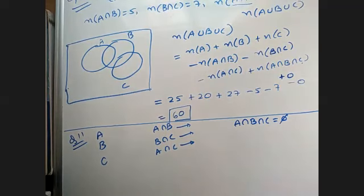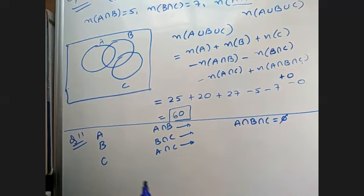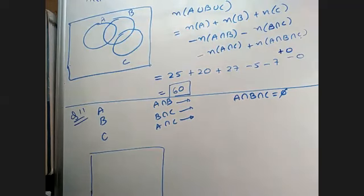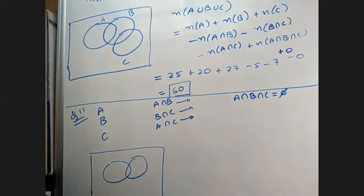Now understand this. You can do this using a Venn diagram. If you have all these elements and draw a Venn diagram, then you can easily work it out. A and B intersection should be something, A and C should be something, and B and C should be something.